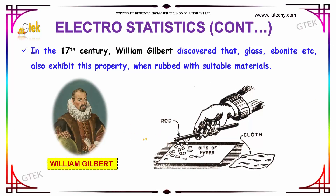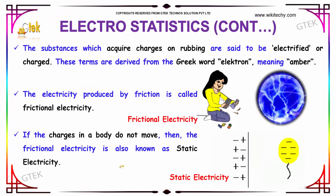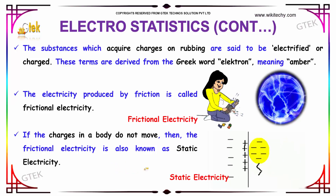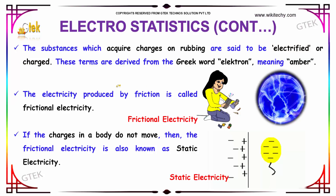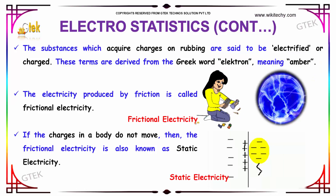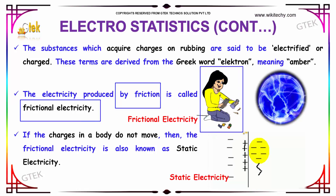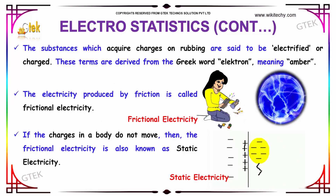In the 17th century, William Gilbert discovered that glass and ebonite exhibit electrostatic properties when rubbed with a suitable material. The substances which acquire charges on rubbing are said to be electrified — or simply called charged particles or charged objects. These terms have been derived from the Greek word 'electron,' which means amber. Frictional electricity is the electricity that is produced by friction, and some examples of frictional electricity can be seen here.